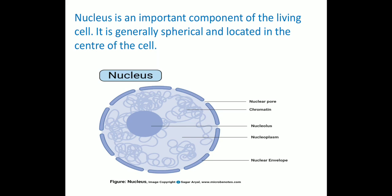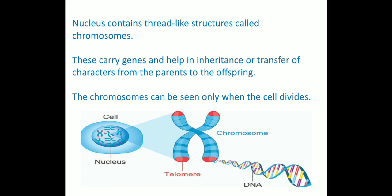Next, we will study about the nucleus. It is generally spherical and located in the center of the cell. The nucleus is separated from the cytoplasm by a membrane called the nuclear membrane. It uses the information in the chromosomes to decide what each organelle should do and the function of the cell. The nucleus also contains an even smaller, concentrated structure called the nucleolus. The nucleus contains thread-like structures called chromosomes, which carry genes that help in the inheritance or transfer of characters from parents to offspring. Chromosomes can be seen only when the cell divides.